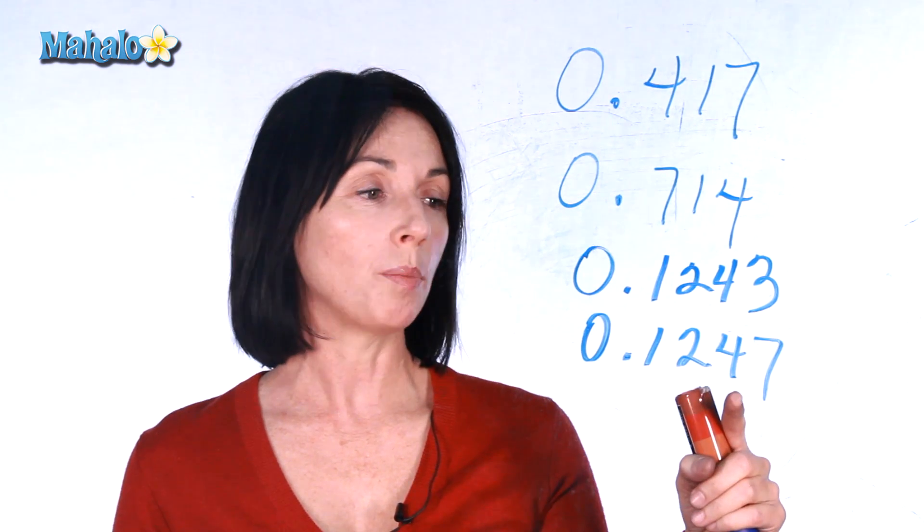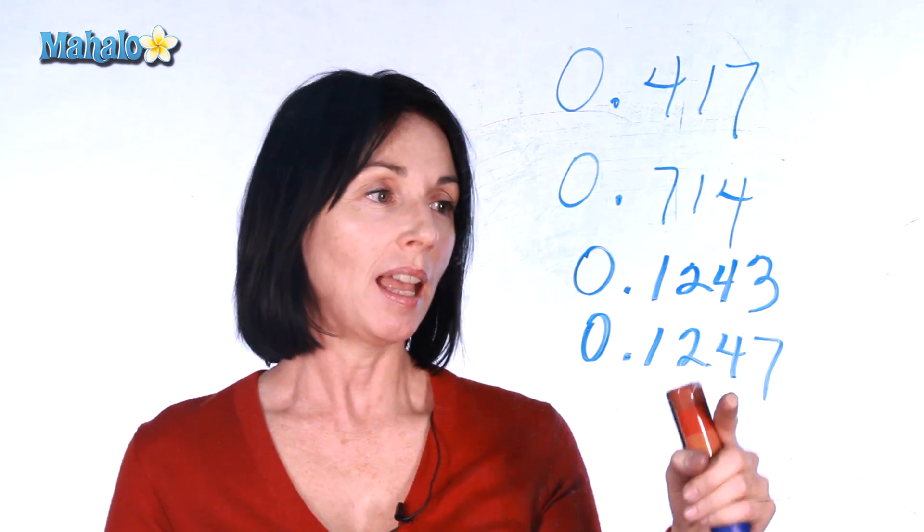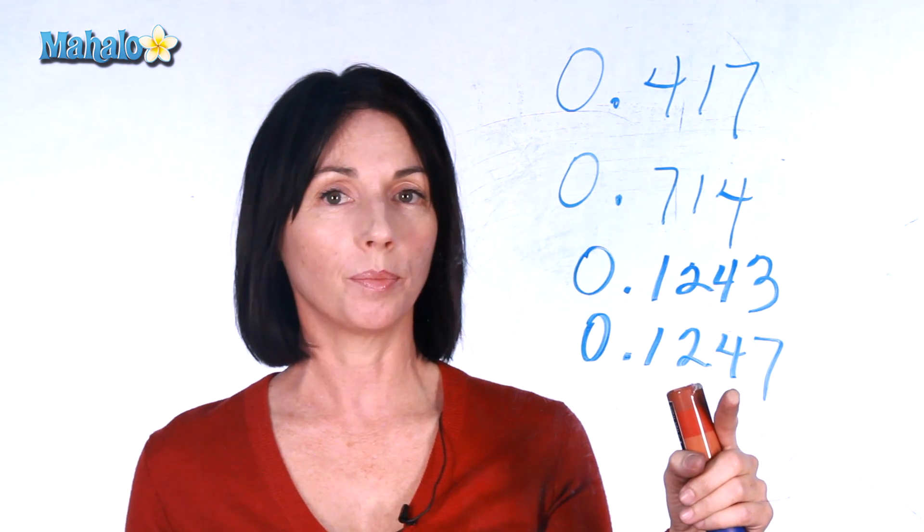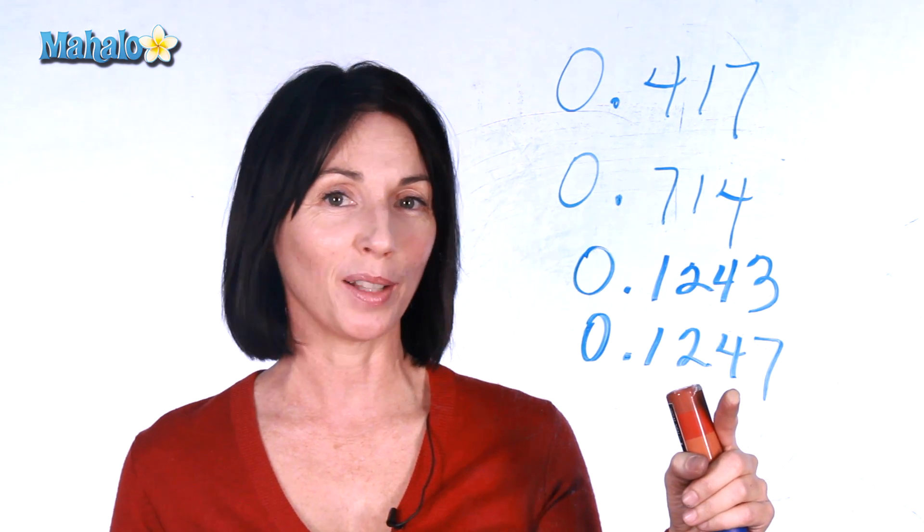If we move over one more place, this is the thousandths position and we have two fours there, so we're still waiting to find out something about the value of these numbers.